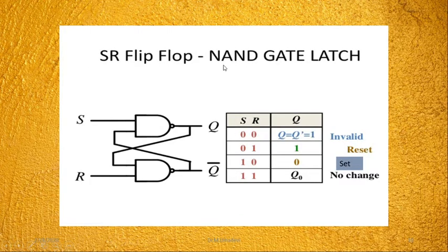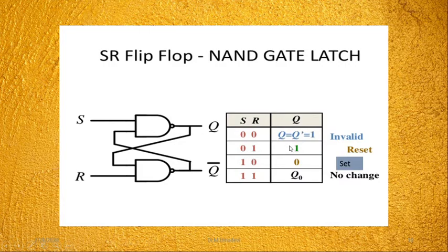Next we will move to NAND gate latch and how to construct SR flip-flop using it. Two NAND gates are used with inputs S and R, and Q, Q-bar are the outputs. The truth table: for S=0, R=0, Q=Q-dash=1 — invalid. For S=0, R=1 — that is reset. For S=1, R=0 — that is set, output is 0. For S=1, R=1, output is Q, Q₀ — no change.